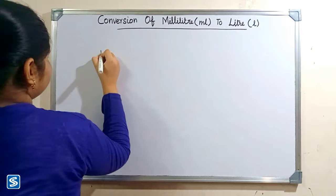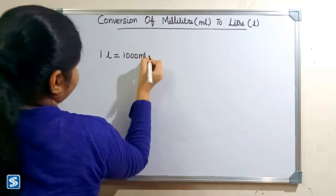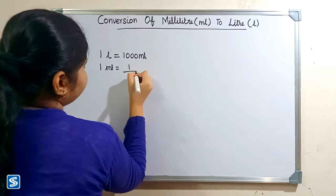Hi friends, welcome to Samish's channel. In this video I am going to teach how to convert milliliters into liters. We already know that one liter is equal to one thousand milliliters, so one milliliter is equal to one by one thousand liters.